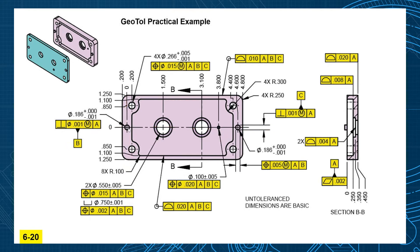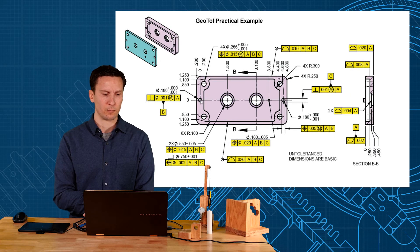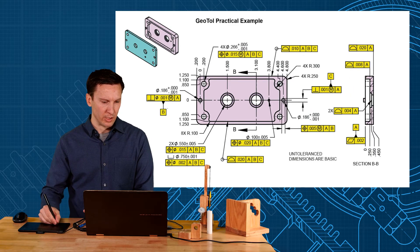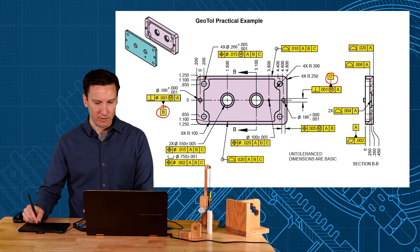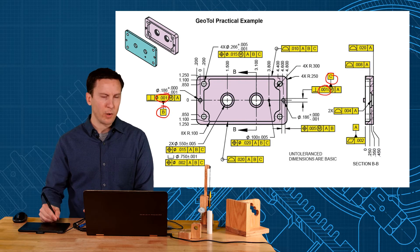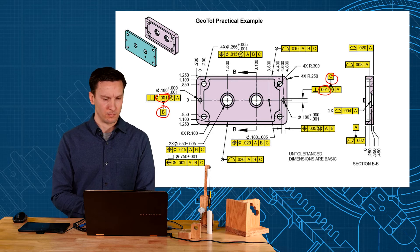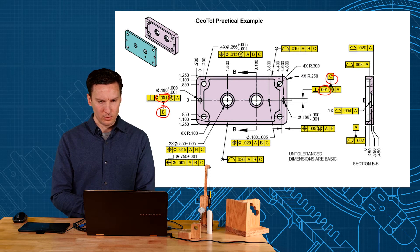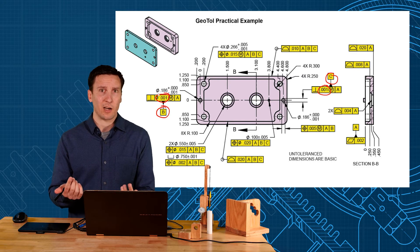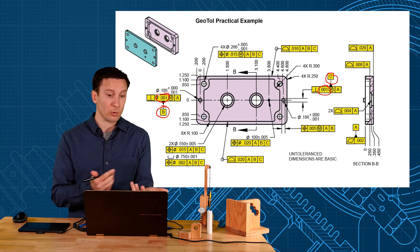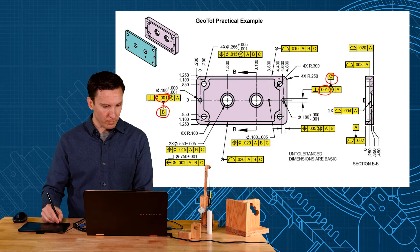So now I'd like you to look at this drawing and tell me which features are most critical. Obviously the datum features, right? So you got B and you got C. Those have pretty tight tolerances on them. But what past the datum features would be critical features? So what I do is I just look for tight tolerances. Tight tolerances usually mean critical features. So what popped out at me was this 2 thou. That's a pretty tight tolerance.